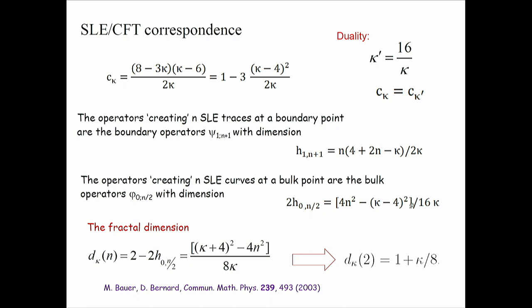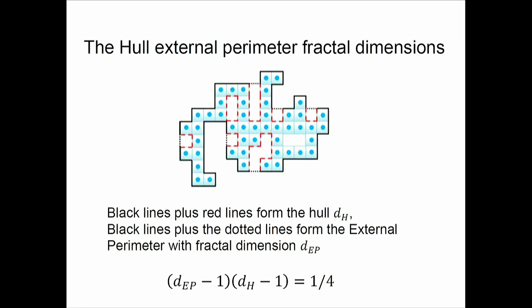Student asks: Is the external perimeter defined to be concave? No, it doesn't have to be concave. What it does is that it makes these jumps. As you can see here, this one is convex.